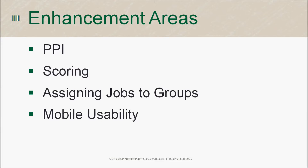For those of you new to PPI, or the Progress at a Poverty Index, the answers to a set of ten questions about a household's characteristics and asset ownership are scored to compute the likelihood that the household is living below the poverty line. This helps organizations evaluate whether they are reaching those that are most vulnerable to poverty. For more information, please go to progressatapoverty.org.